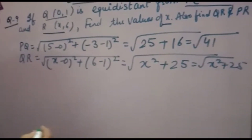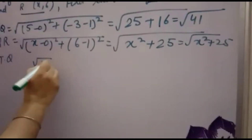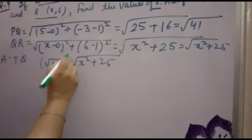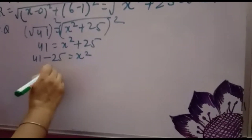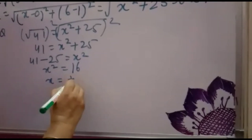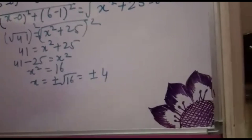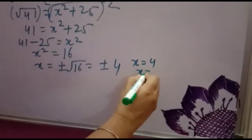Equidistant means their distances are equal. So according to the question, you keep them equal: √41 = √(X² + 25). Squaring both sides gives 41 = X² + 25. So X² = 41 − 25 = 16. Therefore X = ±4.